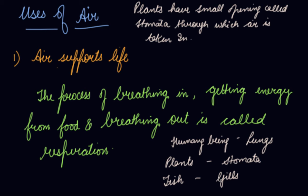Oxygen gets dissolved in water — we can see this by heating water in a pan, where you observe air bubbles showing air is dissolved in water. Fish consume the oxygen present in the water. Similarly, there is air inside the soil, and plant roots take gases from the soil.